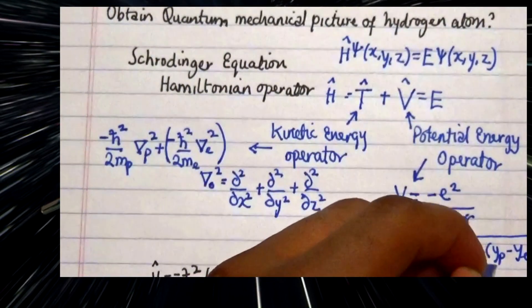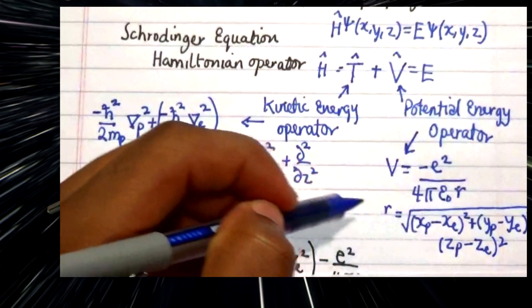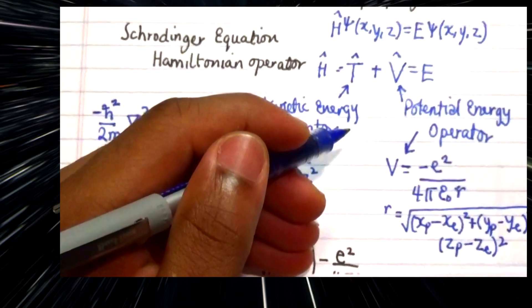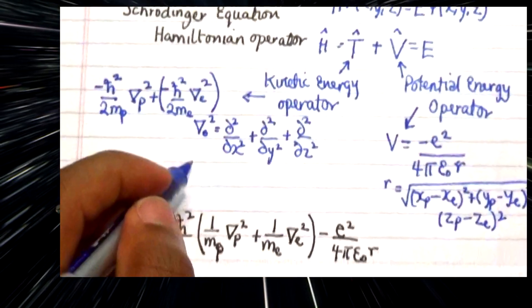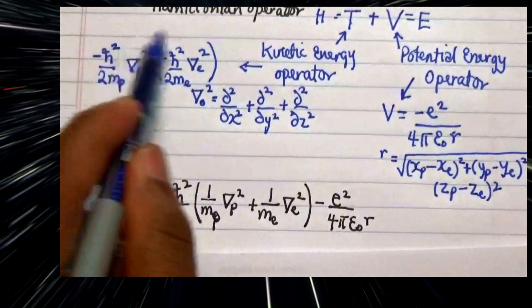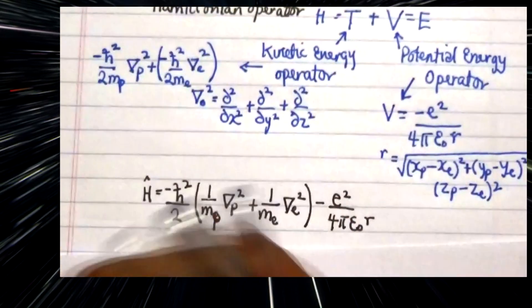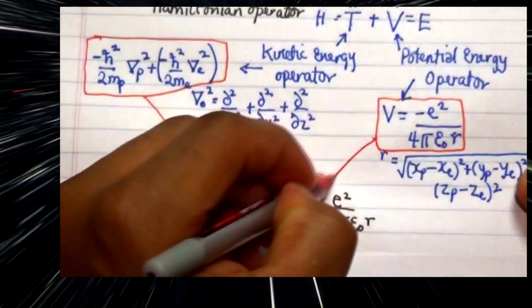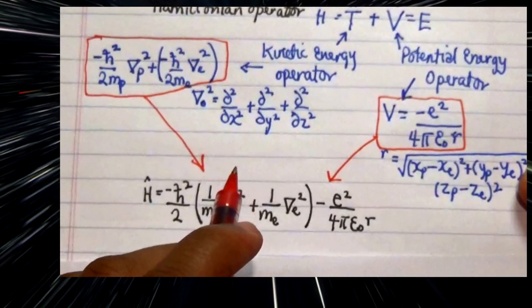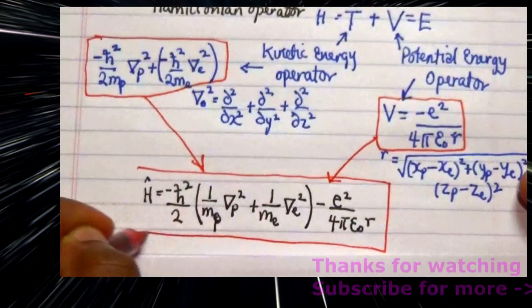Therefore the Hamiltonian operator for the hydrogen atom with a proton, nucleus and electron is expressed as this particular expression where we add our kinetic operator with that of our potential energy operator. This gives us the Hamiltonian operator for a hydrogen atom. This is the expression in quantum mechanics.